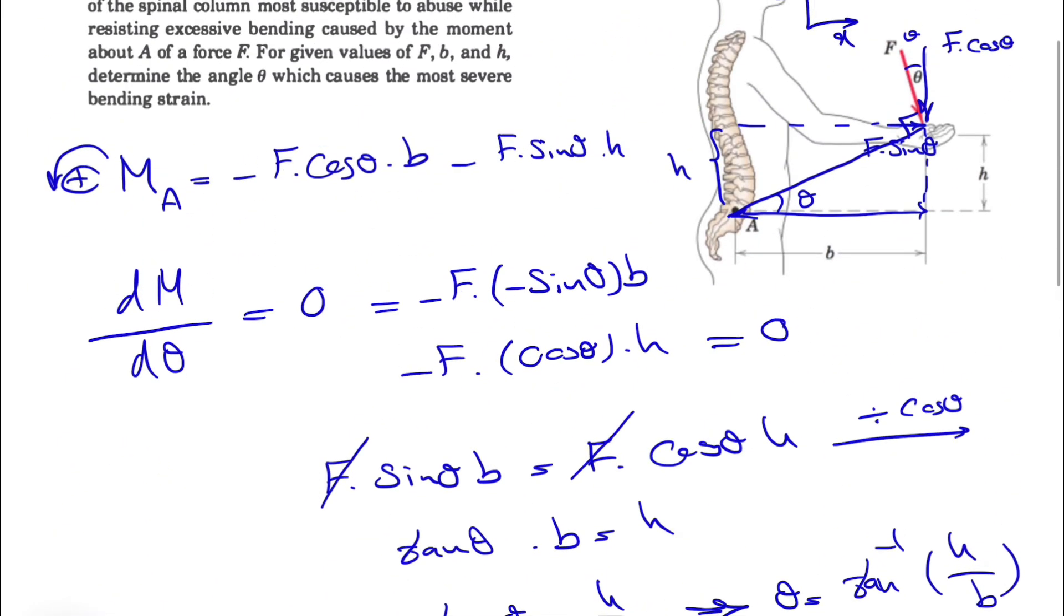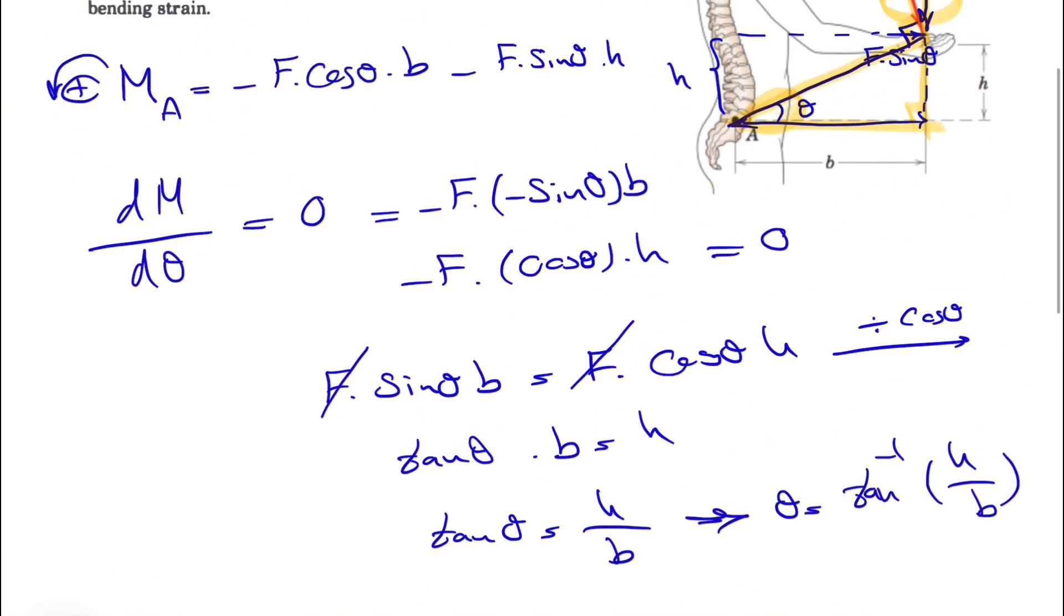We have the same thing here. We have this one perpendicular to this one, and we have this one perpendicular to this one, meaning these two are theta. The rest is pretty similar. Basically, we have the tangent of theta here.